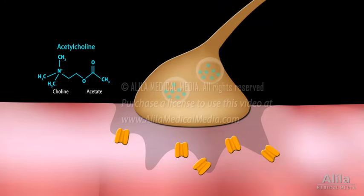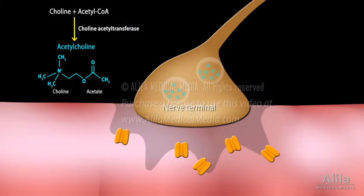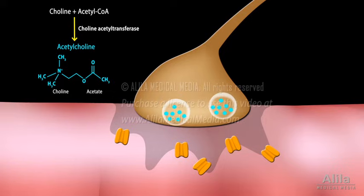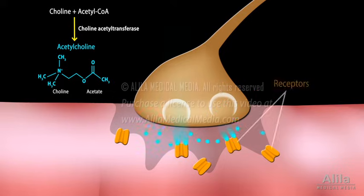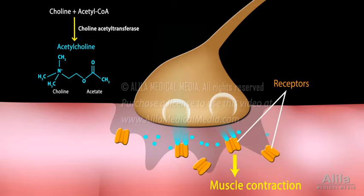Acetylcholine is an ester of choline. It is synthesized and stored in the nerve terminal. When a cholinergic neuron is stimulated, acetylcholine is released into the synaptic cleft, where it binds to its receptor on the postsynaptic cell, triggering a cellular response.